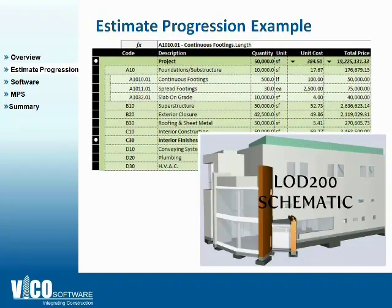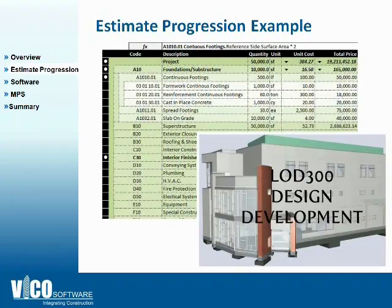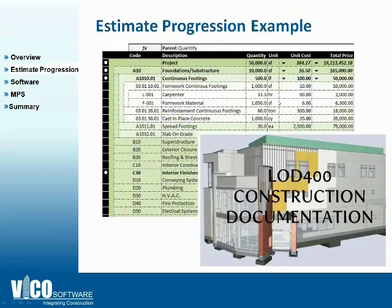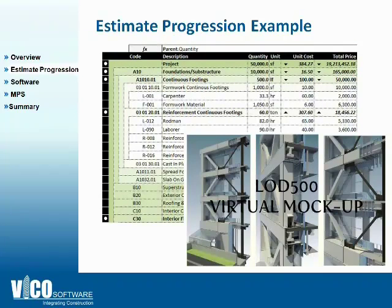Going to the DD phase — design development — the model has progressed with actual design dimensions, and so does our estimate. We know what type of reinforcement or concrete, so we add another layer, another tier to the estimate, and keep changing what is driving the actual price. Going further down in detail, we're breaking it down to the actual resources, and we can go right down to what we call a virtual mockup. Typically you'd never model a whole building to that level of detail, but for intricate areas you may take just a section and model it in detail. Your estimate is developing as much as you want, along with the design.